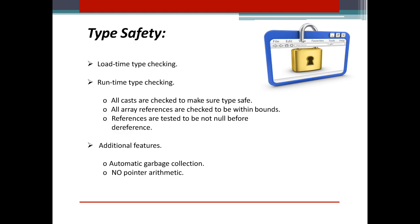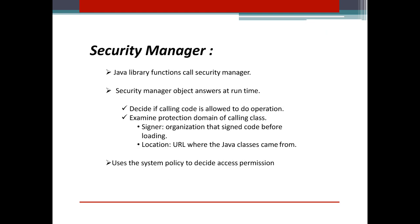These are the types of safety: load-time type checking and runtime type checking. All casts are checked to make sure they are type safe, all array references are checked to be within bounds, and references are tested to be not null before dereference. Additional features include automatic garbage collection and no pointer arithmetic. Java library functions call the security manager, which answers at runtime to decide if calling code is allowed to perform an operation. It examines the protection domain of the calling class, where the signer is the organization that signed the code and the location is the URL where the Java classes came from. It uses the system policy to decide access permissions.